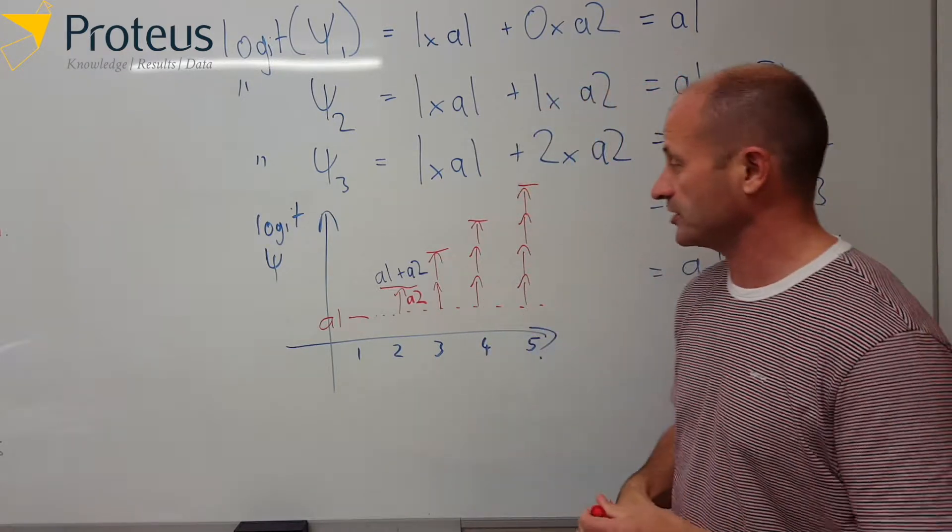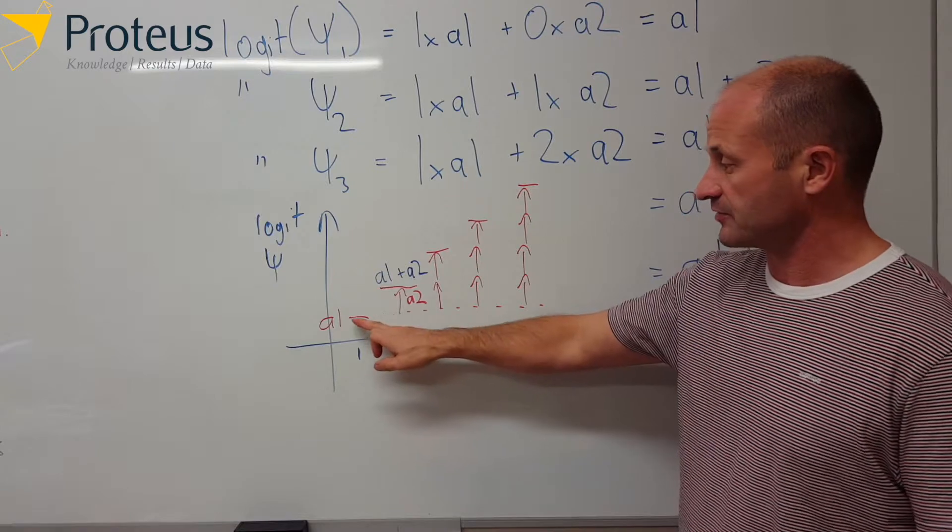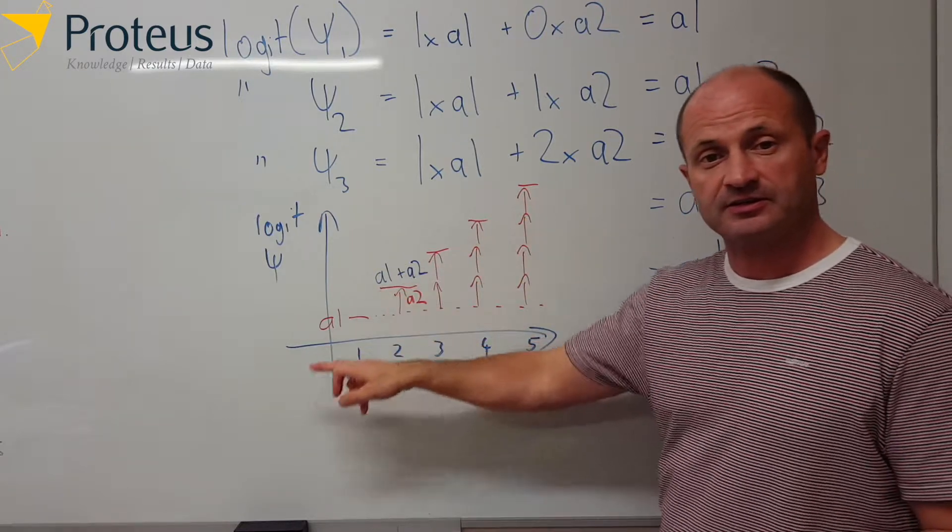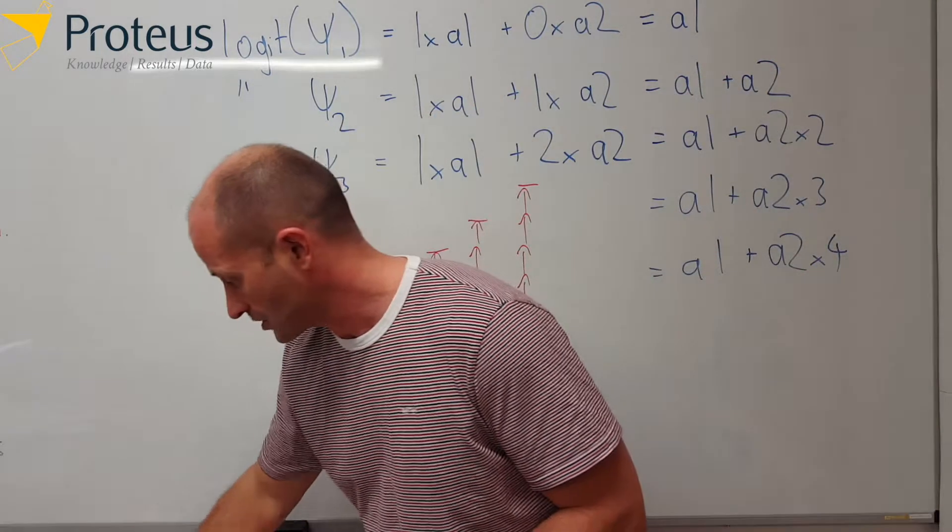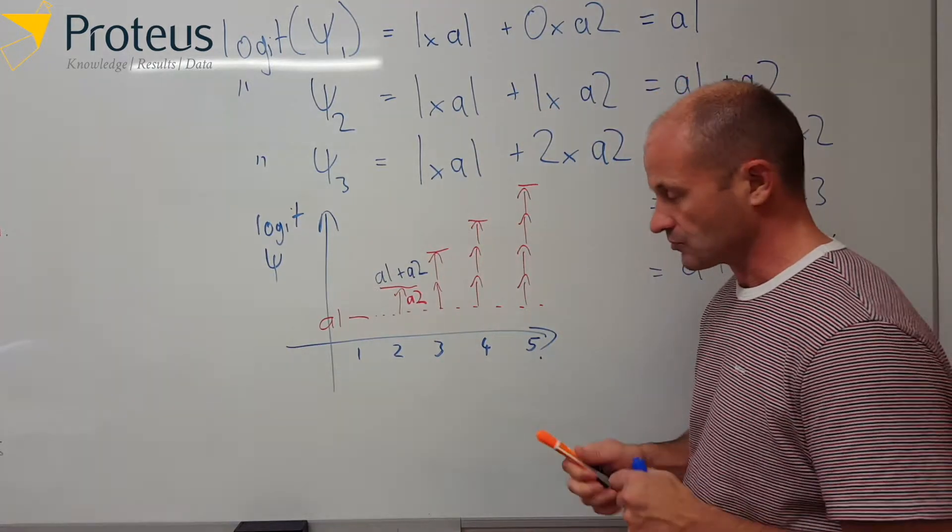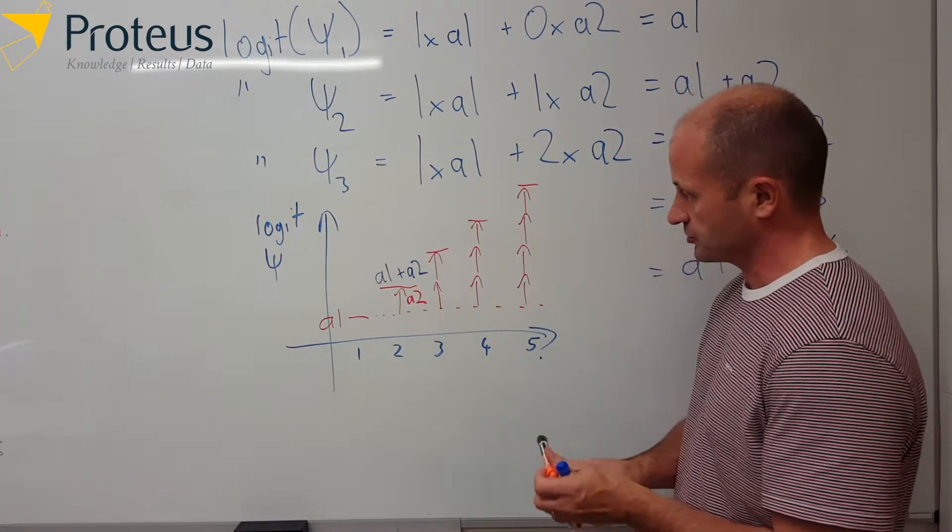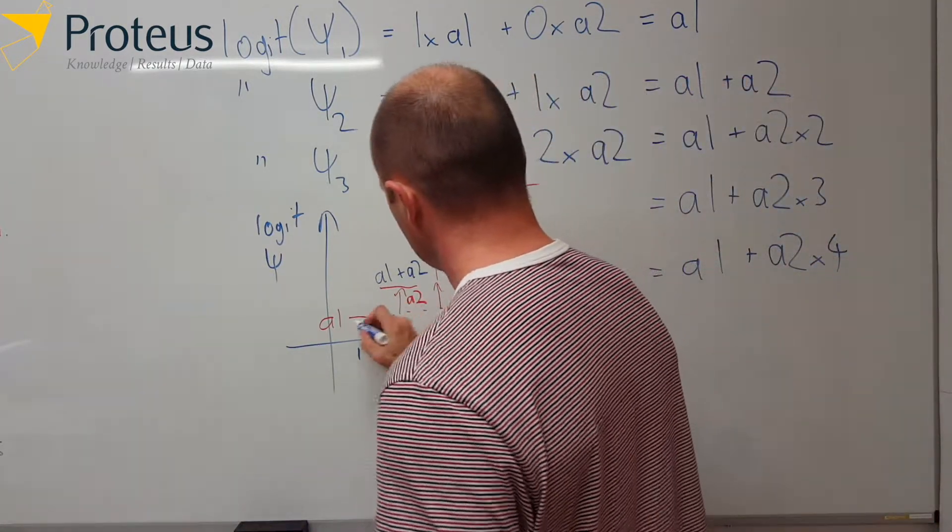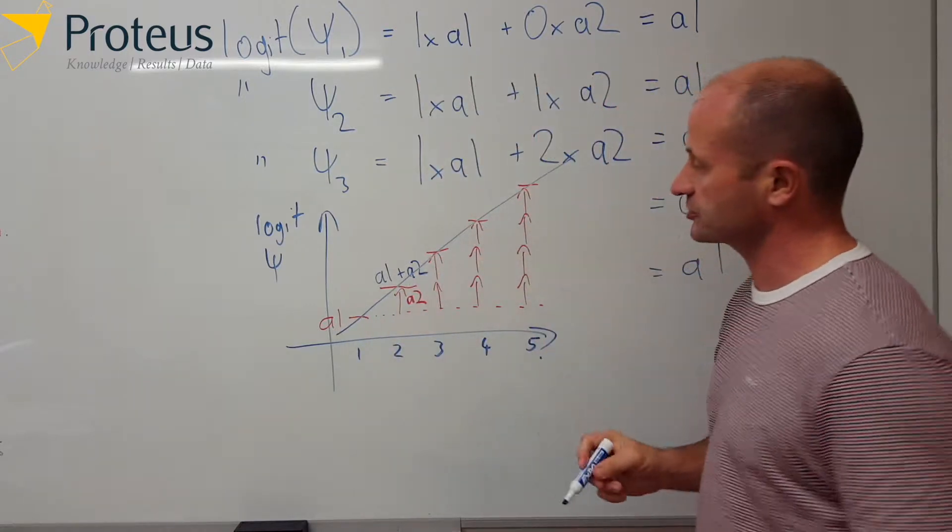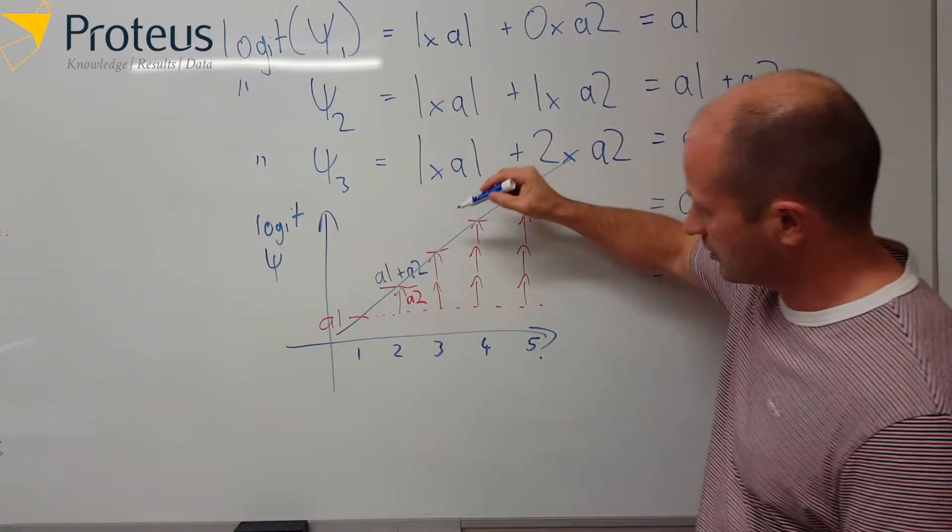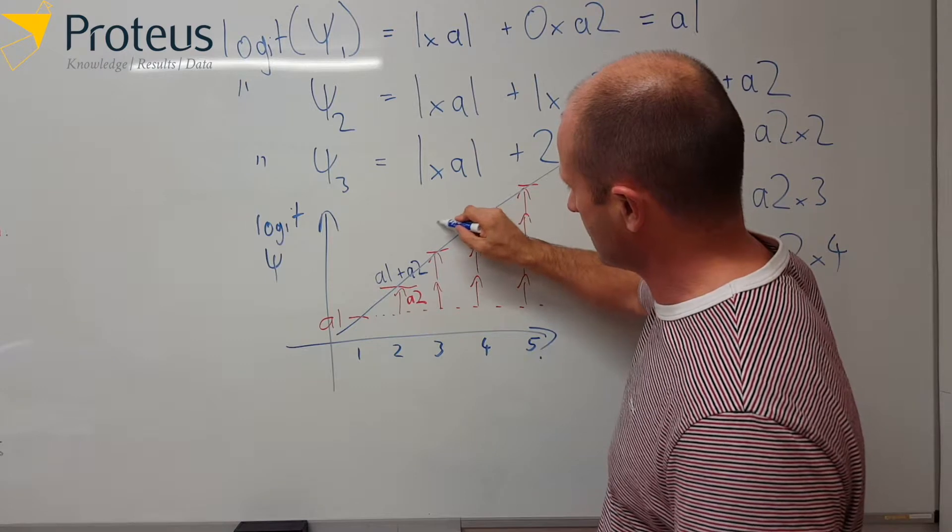And so if we look at this, what we have is this linear effect. What we're saying is that we have this linear change over time where the slope of that line is the amount a2.